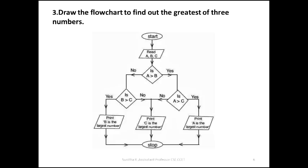Compare A and B: if A greater than B is true, then check A greater than C. If A greater than C is also true, then A is the largest number — print A. If A greater than B is false, then check B greater than C — if true, B is the largest.